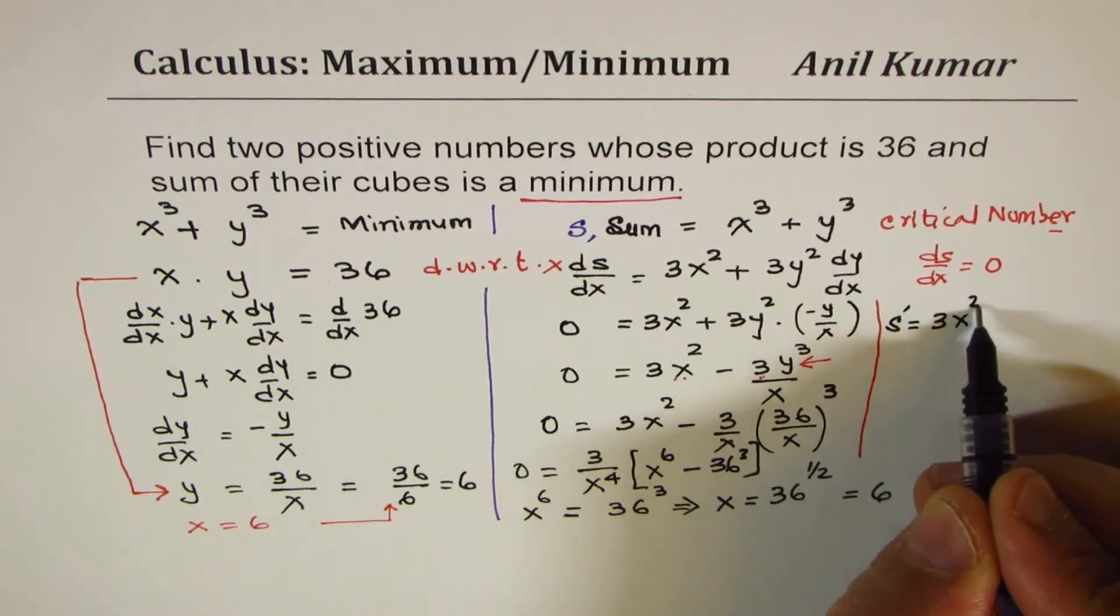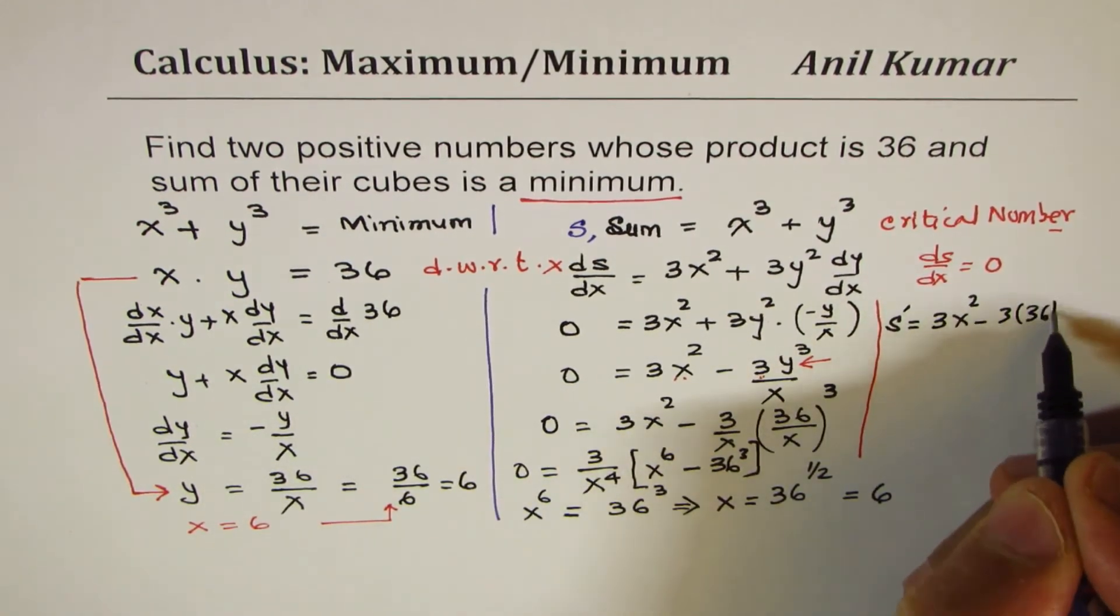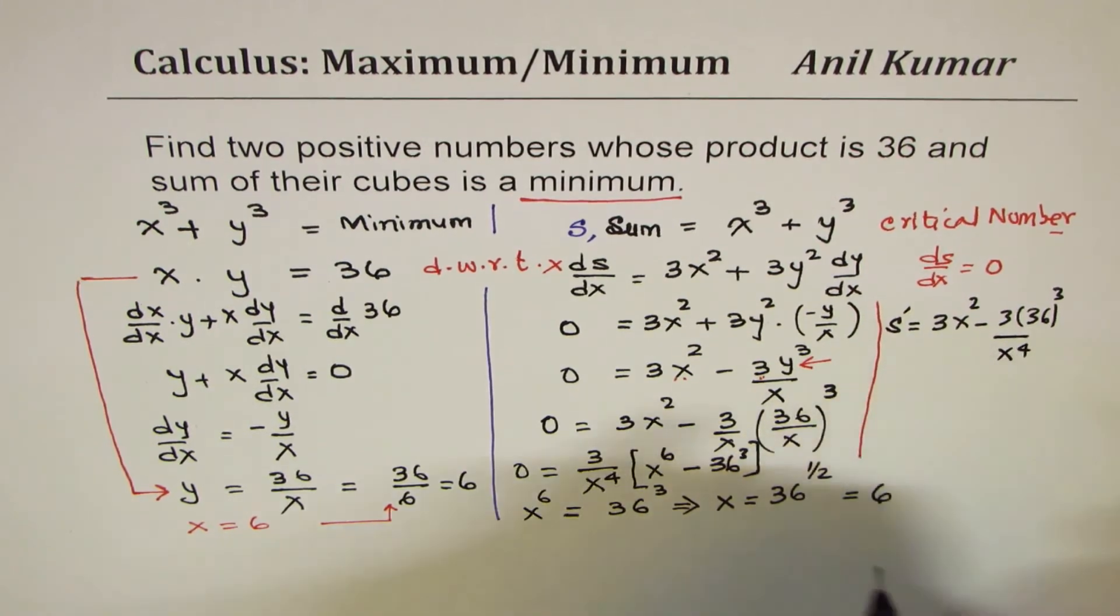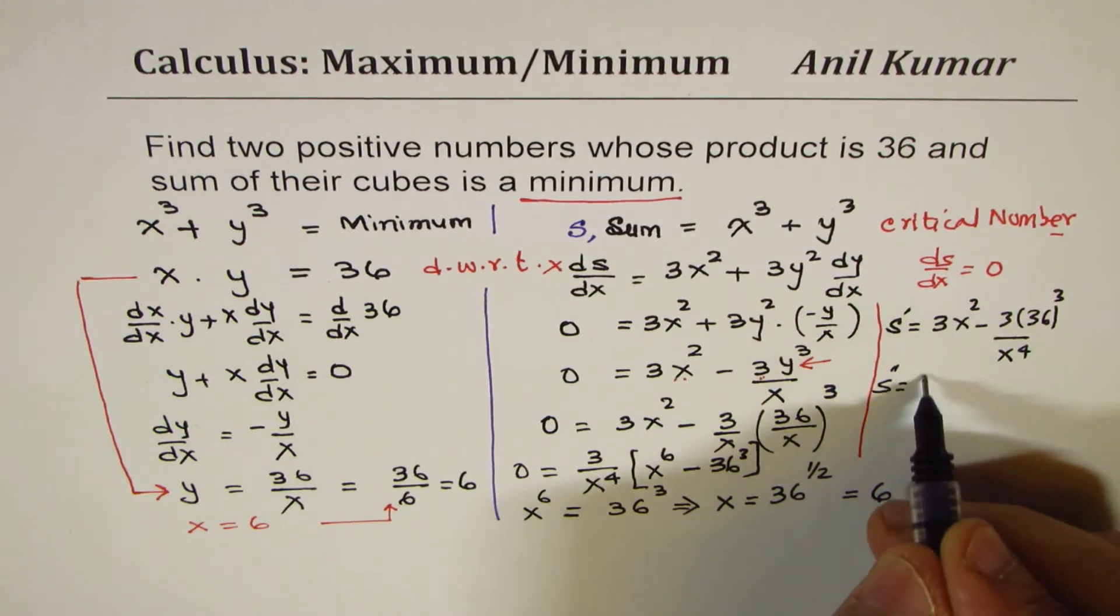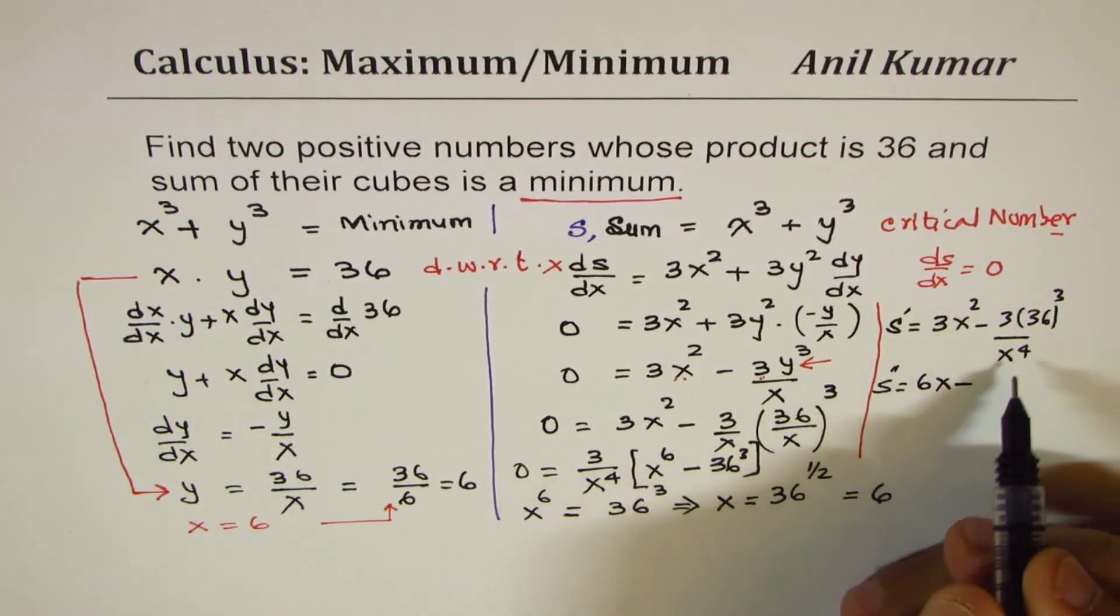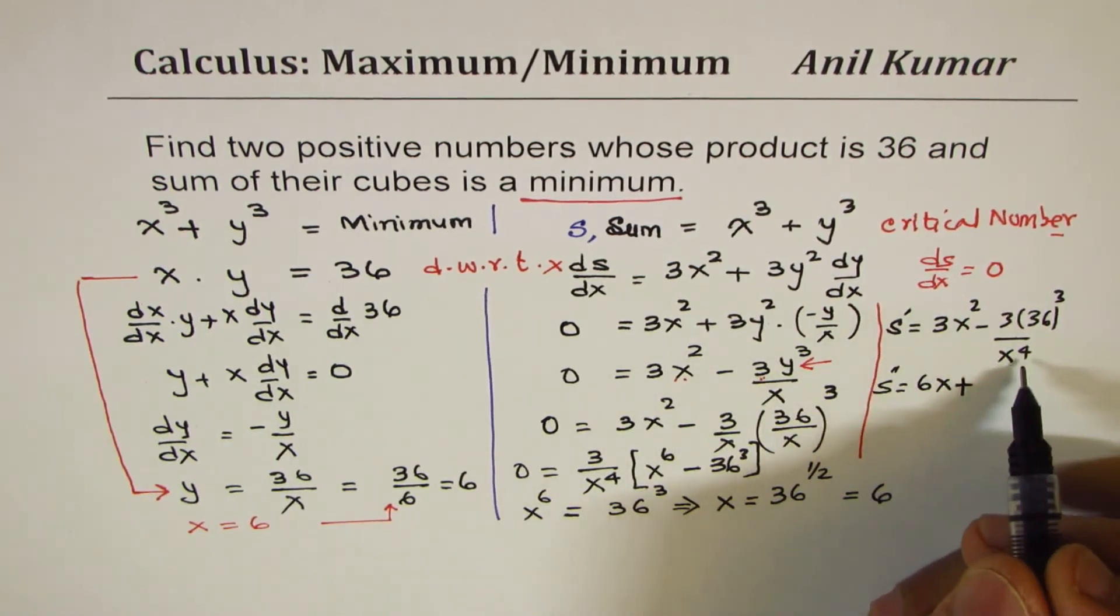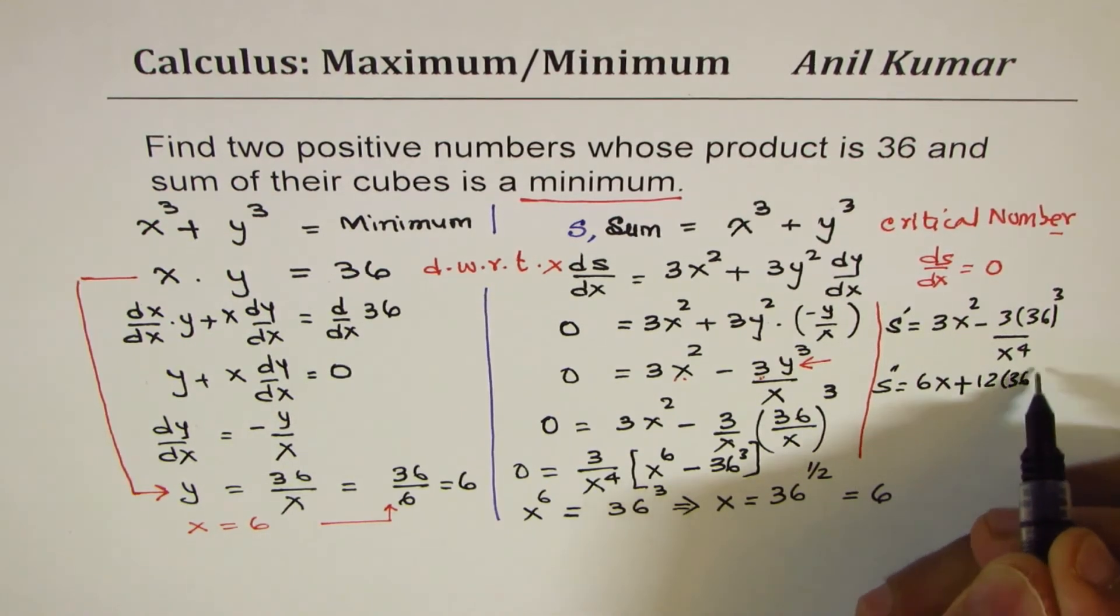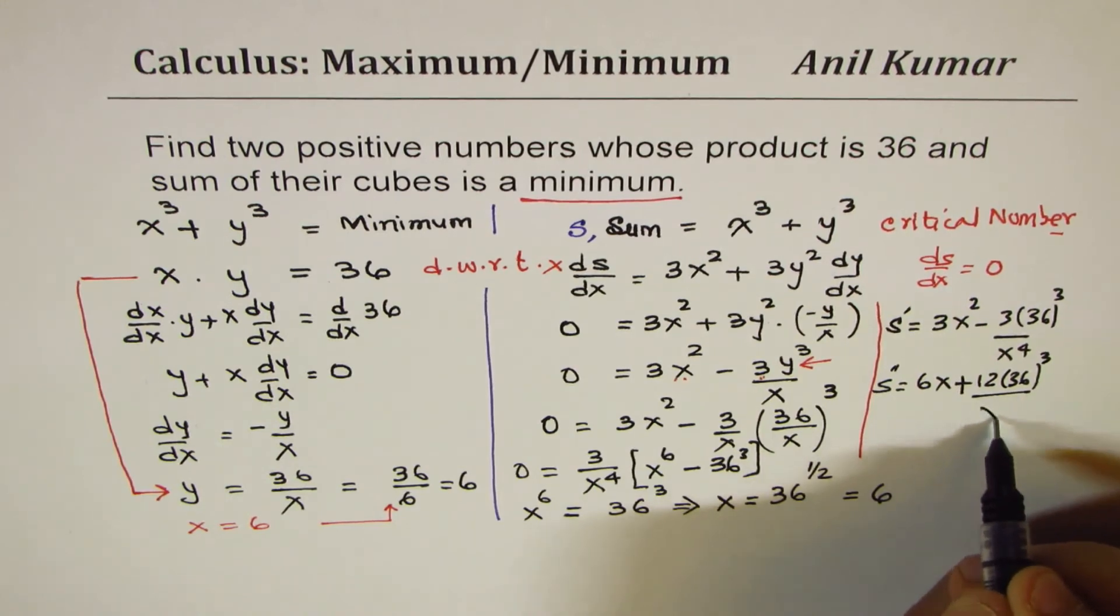Over x to the power of 4. The second derivative for this function is going to be 6x, and that is in the denominator, so -4 that will make this as positive. Positive 4 times 3 is 12 times 36³.